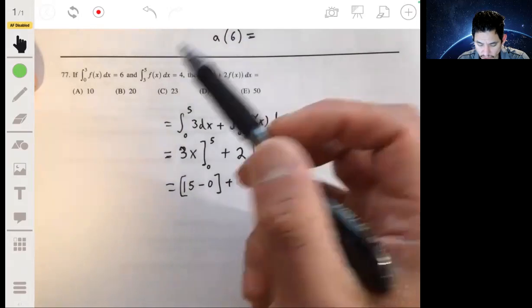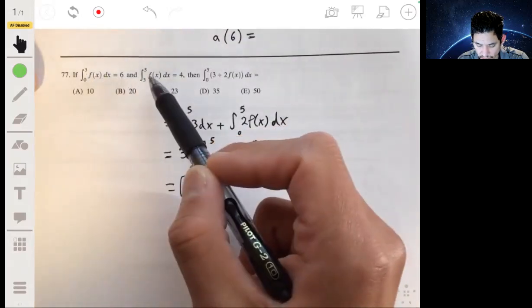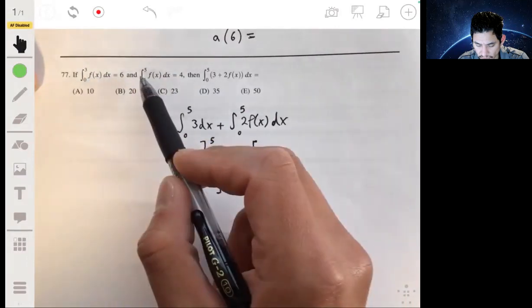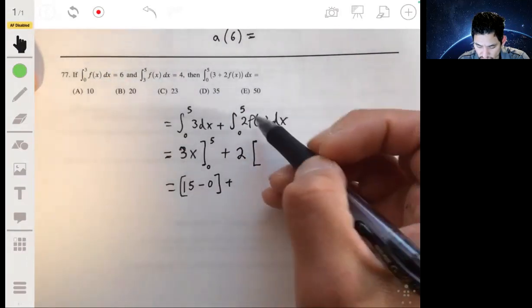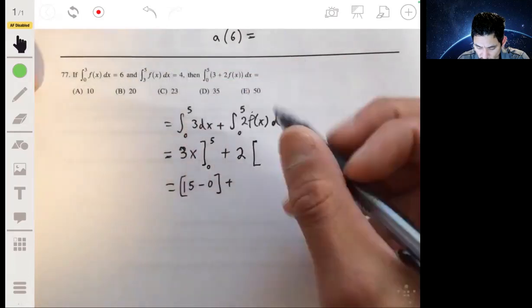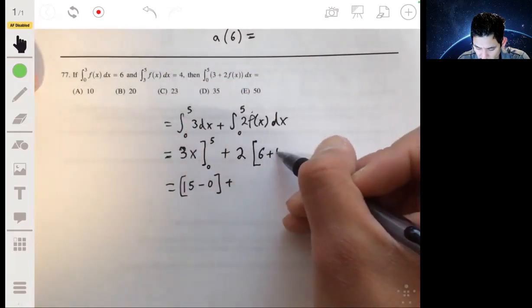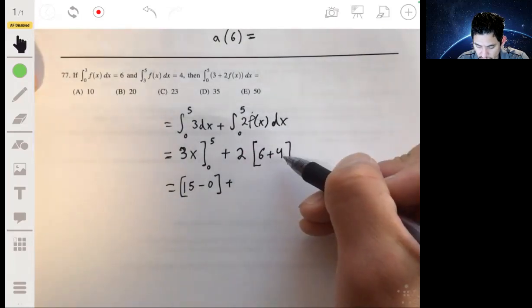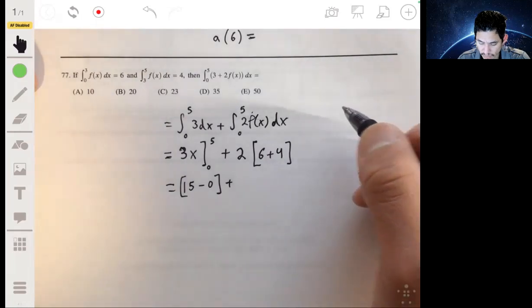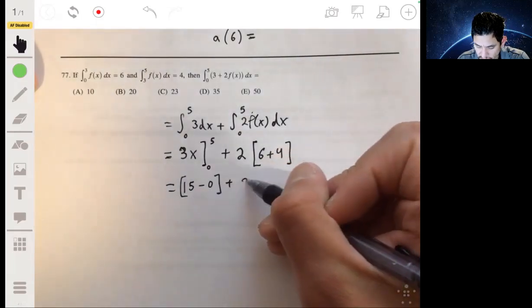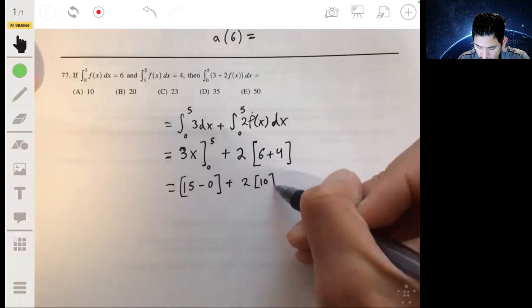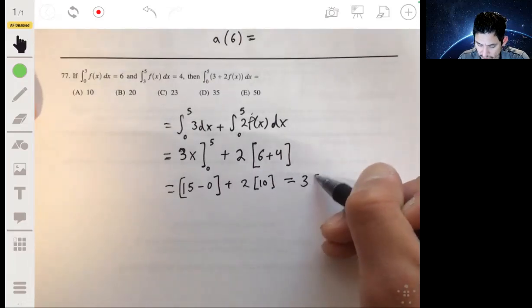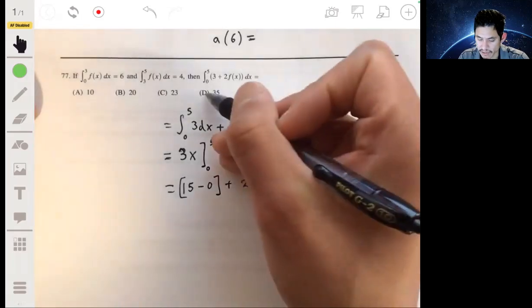Now the integral from 0 to 3 is 6, integral from 3 to 5 is 4, so then the integral from 0 to 5—you can connect these two from 0 to 5—it's just 6 plus 4. And again, we're just multiplying this quantity by 2. And then all you really have is 15 plus 2 times 10, or 15 plus 20, which is just 35. Your answer is D.